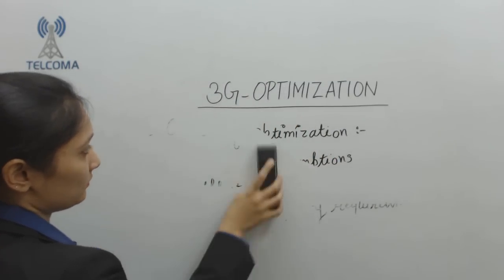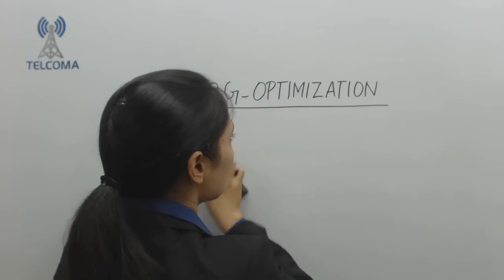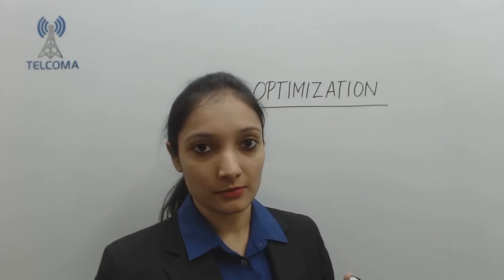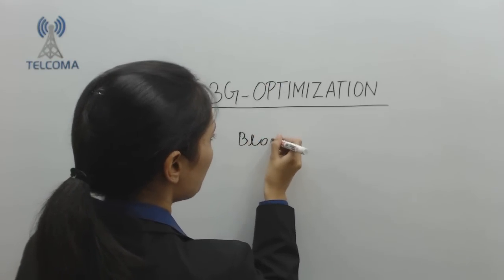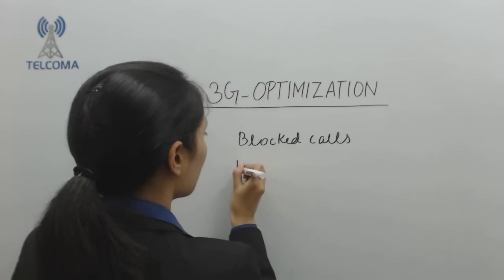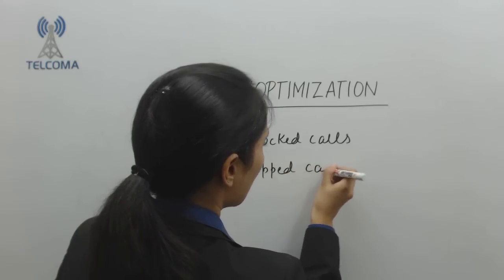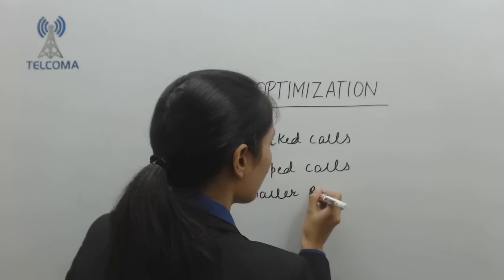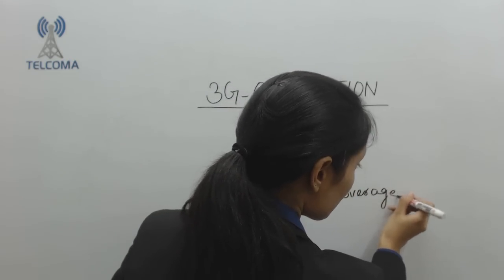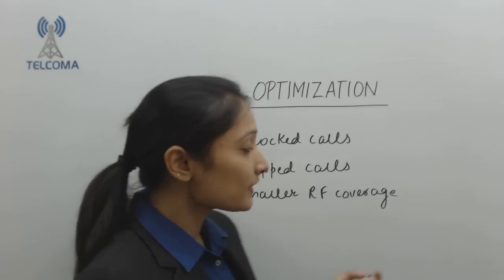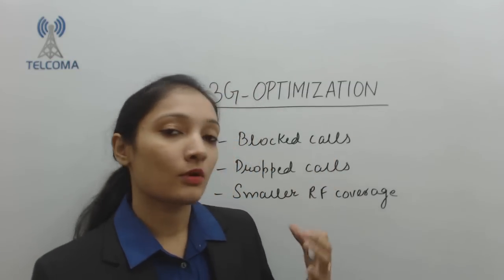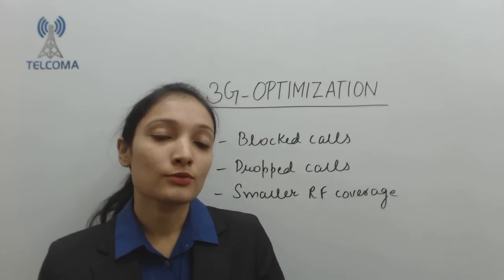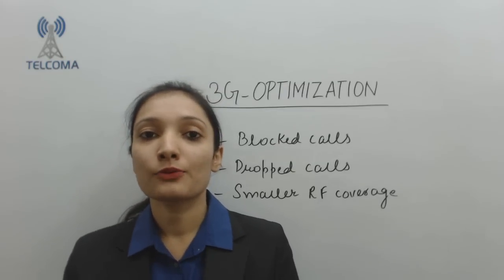If you are not optimizing the network and not keeping a check on its performance, the system will result in a degraded system. If a particular network is not optimized, users in that area will suffer from blocked calls, dropped calls, and smaller RF coverage. A user facing such problems will migrate to another network, causing a loss of revenue to the operator. That's why it's important to optimize a network.